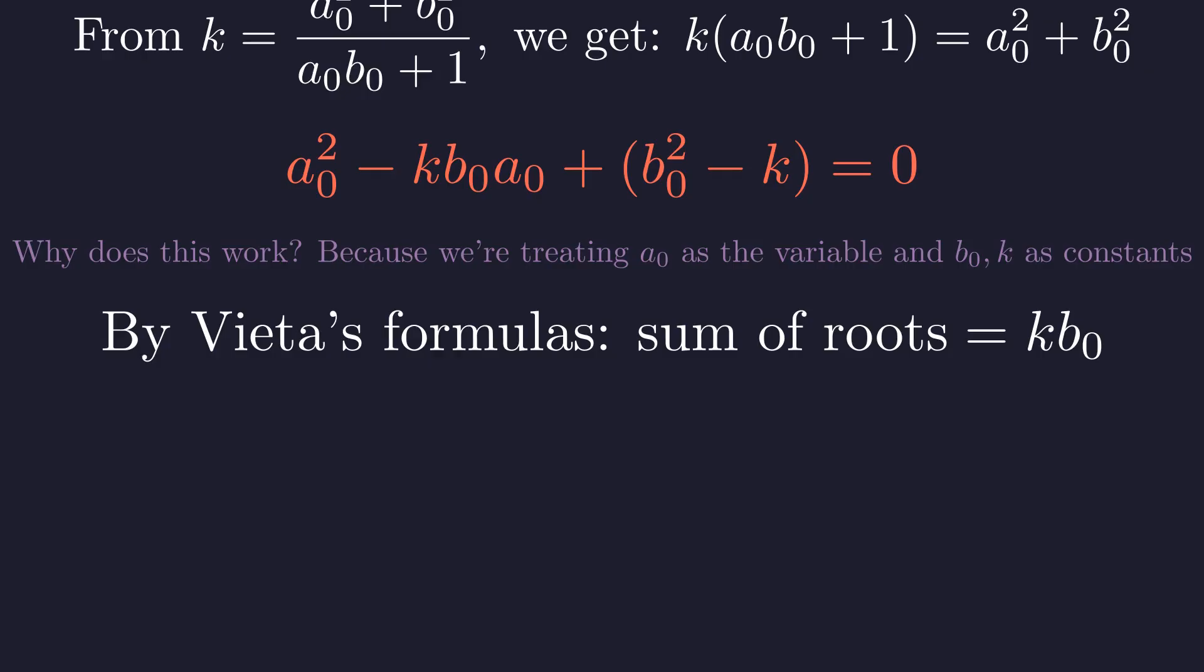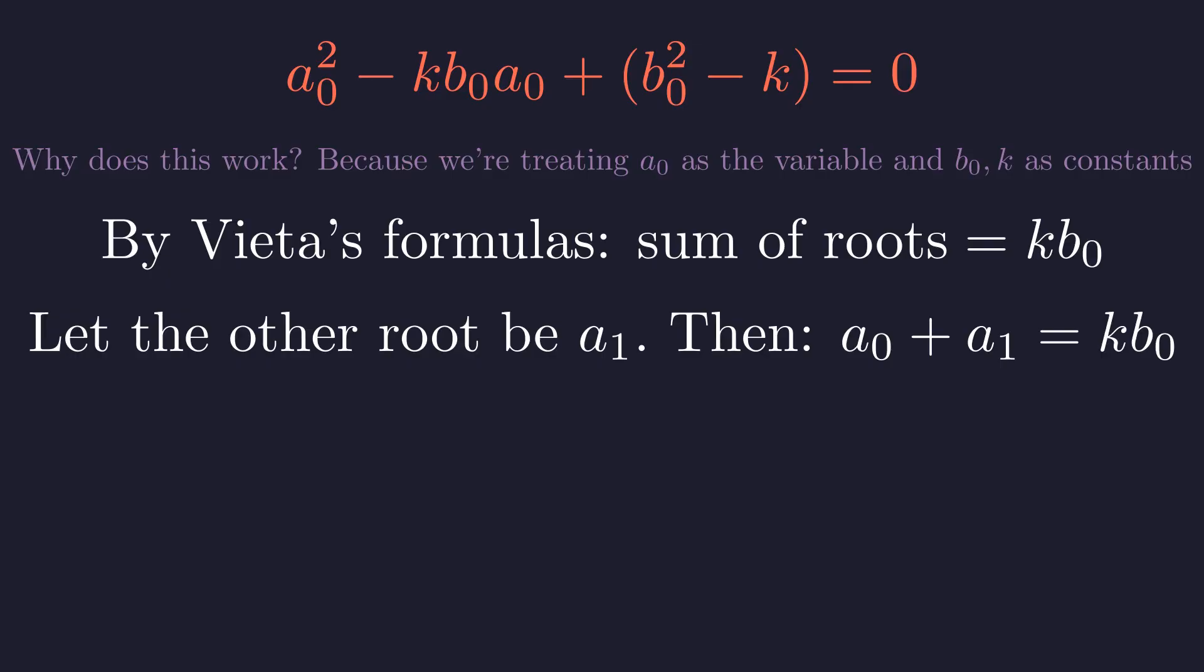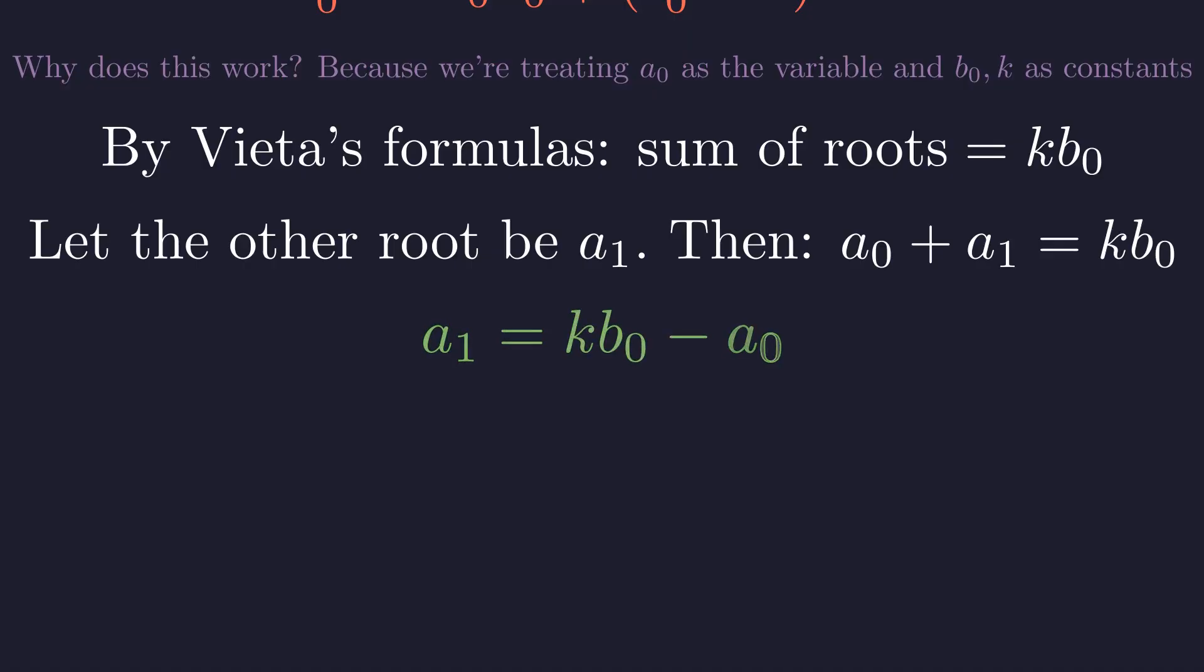Vieta's formulas tell us that the sum of the two roots equals k times b0. Let's call the other root a1. Then a0 plus a1 equals k times b0. Solving for a1, we get a1 equals k times b0 minus a0. Since k, b0, and a0 are all integers, this formula shows a1 must also be an integer. We've discovered a machine that takes one integer solution and produces another.